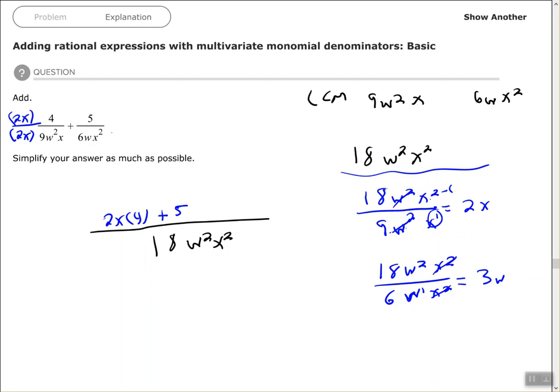So I multiply this second denominator by 3w to get to my common denominator. I need to multiply the numerator by the same thing.